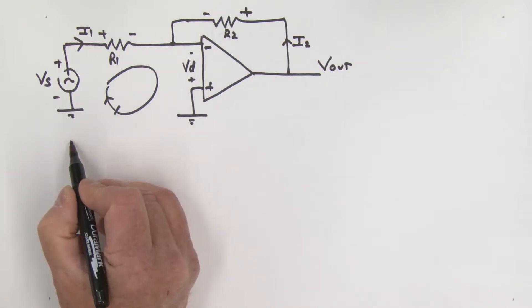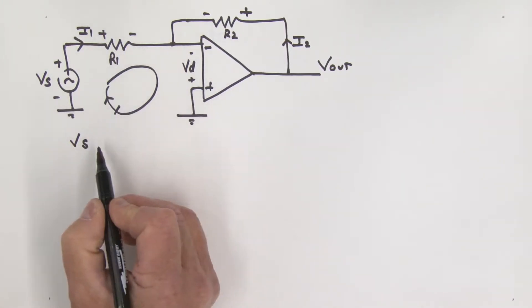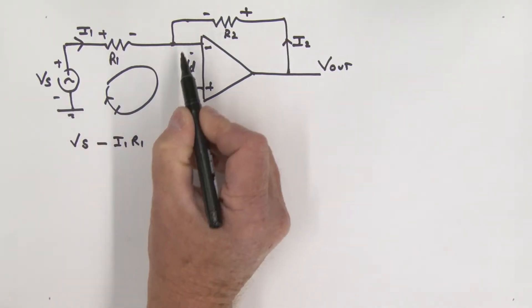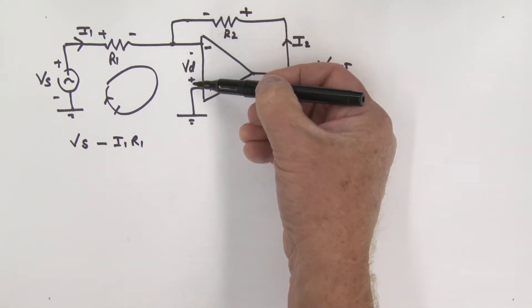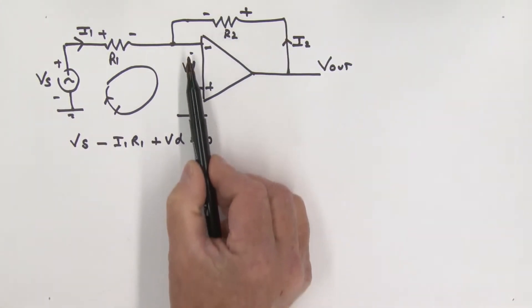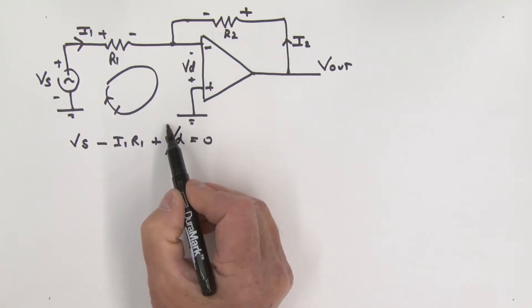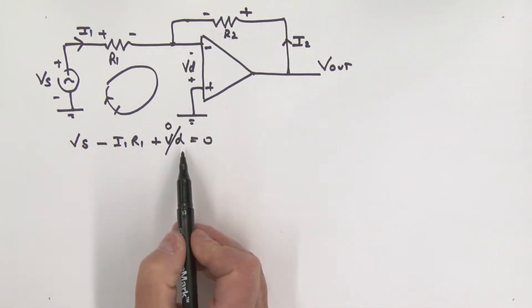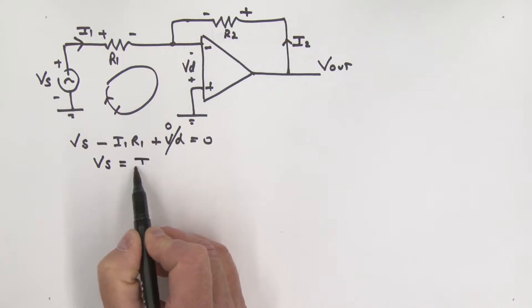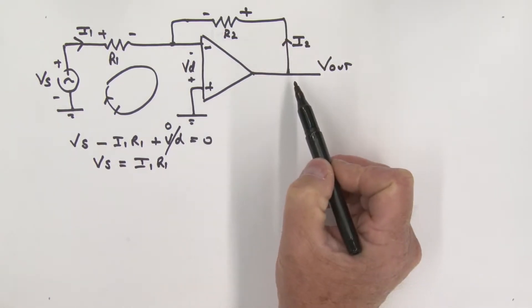Going around the input loop: from minus to plus we get positive Vs; across R1 from plus to minus that's a minus i1·R1; then across Vd from minus to plus that's plus Vd — and all of that equals zero. But since we're assuming Vd equals zero, that term drops off. This means Vs is simply equal to i1 times R1.